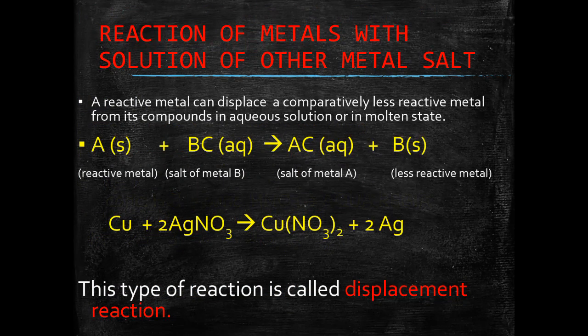The last chemical property of metals is reaction of metals with solution of other metal salts. A reactive metal can displace a comparatively less reactive metal from its compound in aqua salt solution or in molten state.